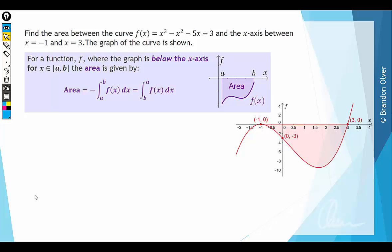For a function f where the graph is below the x-axis over the interval we're trying to find the area over, we can use the following formulae. The first option is to introduce a negative sign at the front of the integral because the definite integral for a part of the curve that's under the x-axis is going to be negative. So two negatives will make that area value positive.